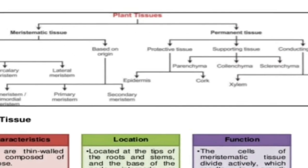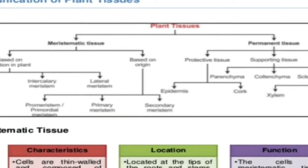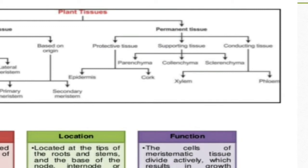Plant tissues have been categorized into two categories: meristematic tissue and permanent tissue. The meristematic tissue is of three types: apical meristem, intercalary meristem, and lateral meristem. The permanent tissues have been categorized into simple permanent and complex permanent. Simple permanent is further divided into protective tissue (epidermis and cork) and supporting tissue (parenchyma, collenchyma, and sclerenchyma). The complex tissue, also known as conducting tissue, is divided into xylem and phloem.